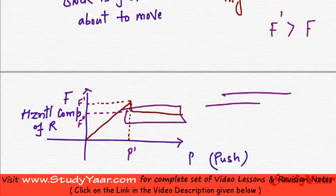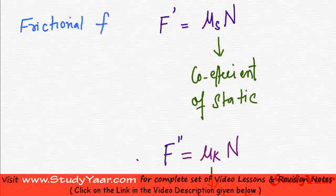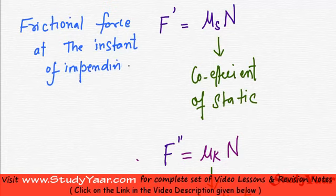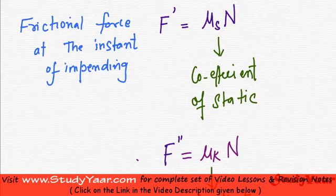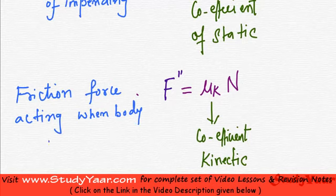So let us define our terms now. My F' is the frictional force at the time when motion is impending — frictional force at the instant of impending motion. Impending motion means the motion is just about to happen. And your F'' is the frictional force acting when the body is in motion. These are two important relations that you must keep in mind.